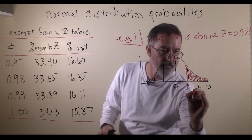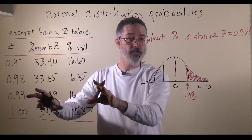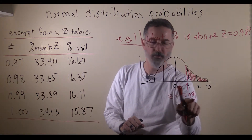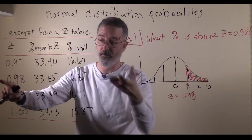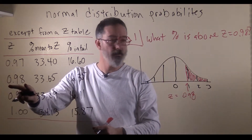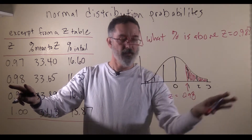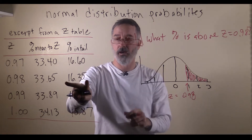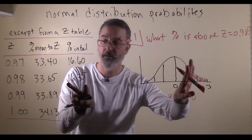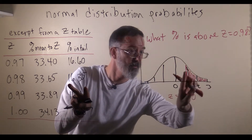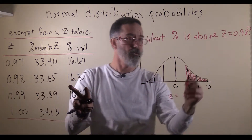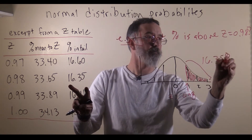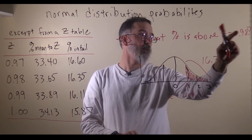We want to solve this problem with the information available on the table. The z-score we are looking for is 0.98. What we can do is figure out what percent is above and beyond that. The easiest way is to look at the percent in the tail — the percent of the normal distribution in the tail beyond that z-score. That area is 16.35%. That is the percent that is above z equals 0.98.